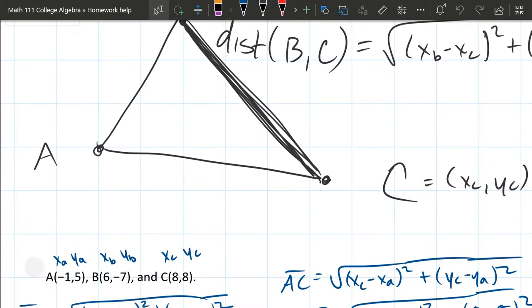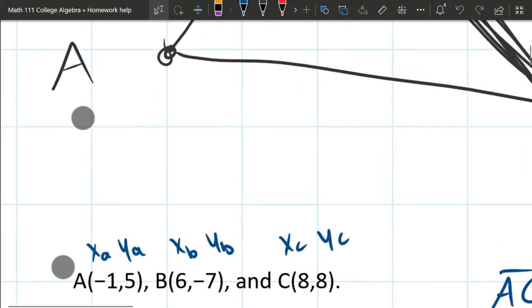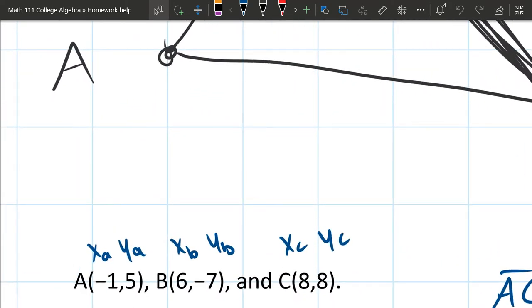So all I did was I called the first coordinate, this is the x-coordinate of the A point, so I called it x with a little a. The 5 is the y-coordinate of the A point, so I called it ya. And 6 is the x-coordinate of B, negative 7 is the y-coordinate of B, 8 is the x-coordinate of C, 8 is the y-coordinate of C as well.